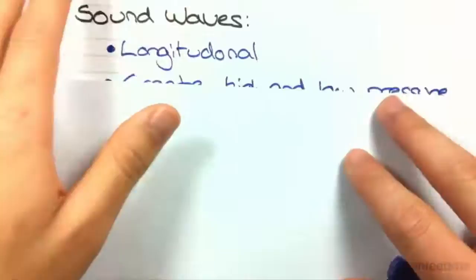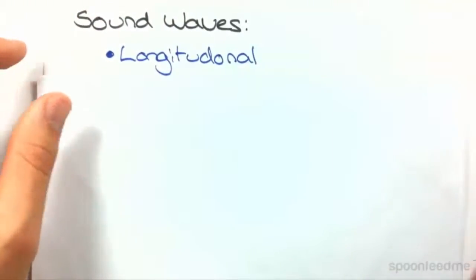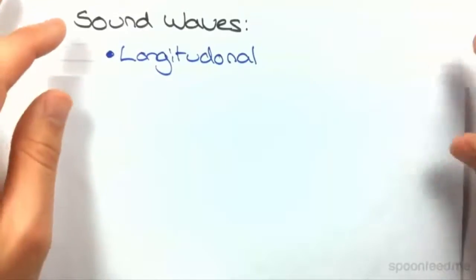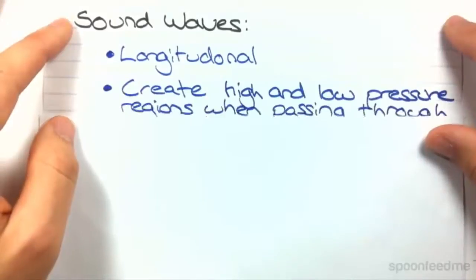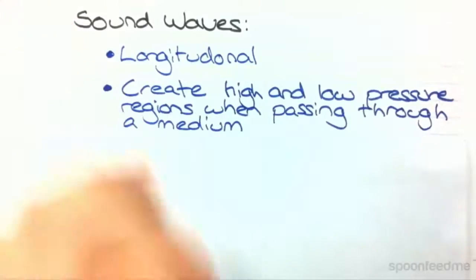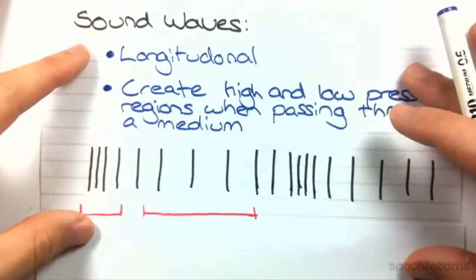Right, so let's have a look at some descriptions. First of all, sound waves are longitudinal waves, meaning that the particles moving in the waves move parallel to the direction of the wave. This leads to a creation of high and low pressure regions when the sound wave is passing through a medium. And that looks something like this.